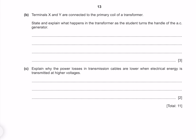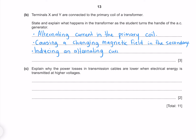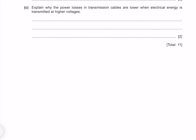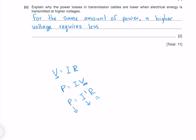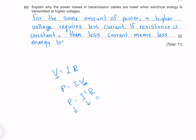Terminals X and Y are connected to the primary coil of a transformer. State and explain what happens in the transformer as the student turns the handle. We have an alternating current in the primary coil, causing a changing magnetic field, which induces an alternating current in the secondary coil. Regarding power losses: recalling P equals I²R, if we have a higher voltage we have a lower current, so for the same power a higher voltage requires less current — if resistance is constant, less current means less energy lost as heat.